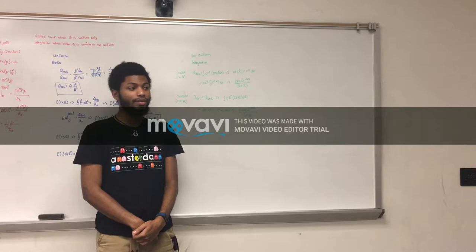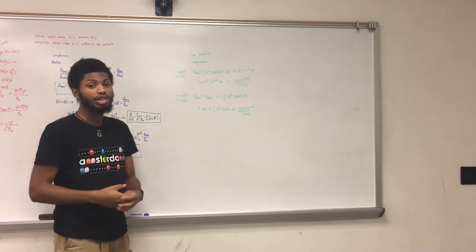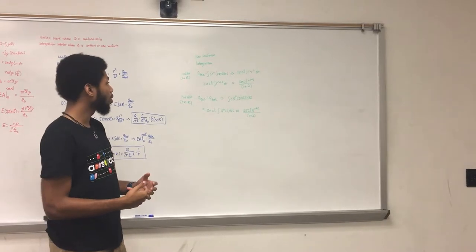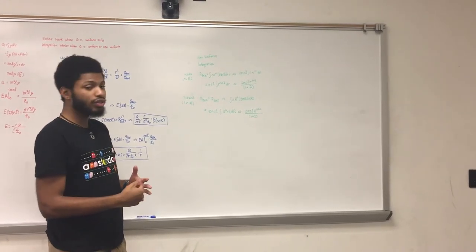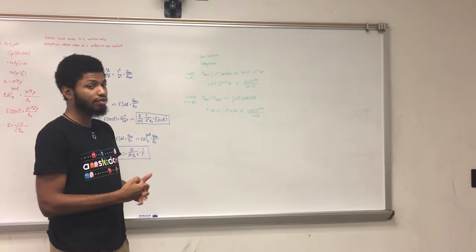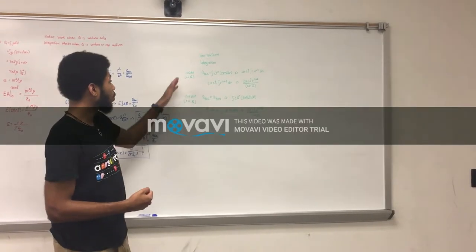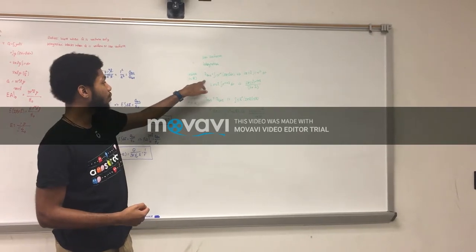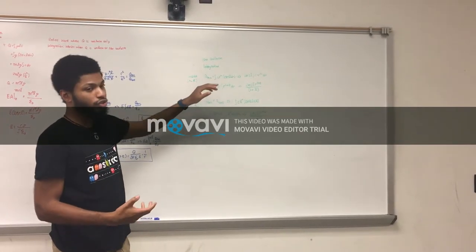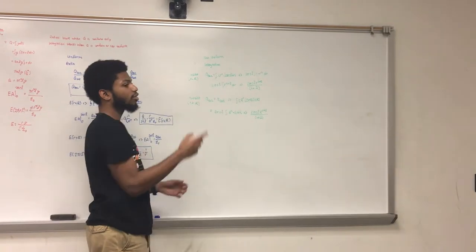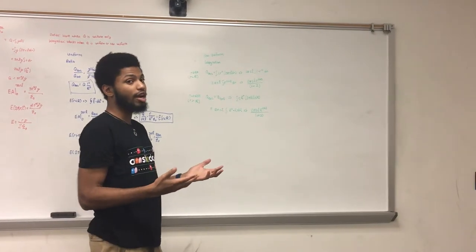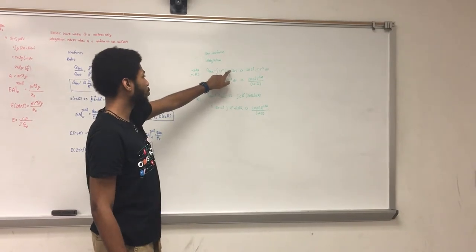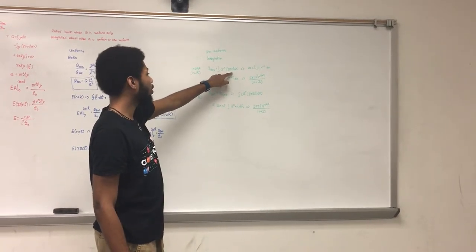Hi, my name is Chris Gallens, and I'm going to explain what you do when you have a non-uniform charge for your electric field for a cylinder. For when you have little r less than big R, your q enclosed is going to be equal to c — just some constant value — times r to the power of n, where n could be anything: one-half, two, three, whatever you want. Your dv is going to be 2 pi r l times dr.